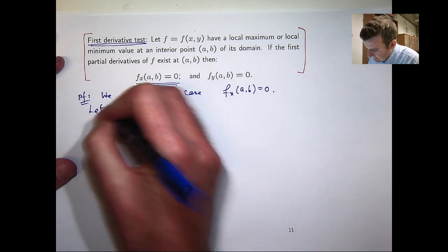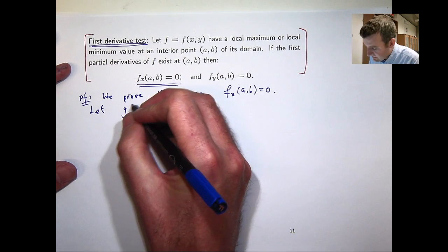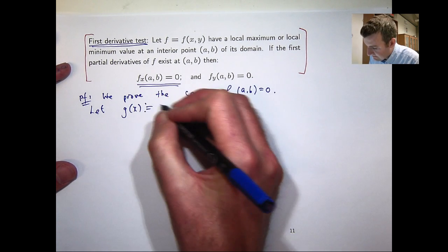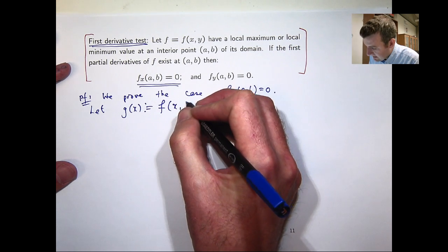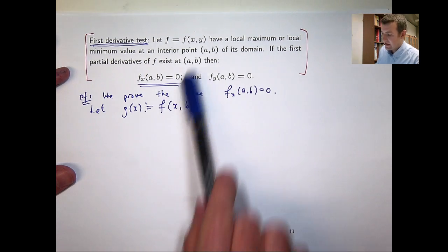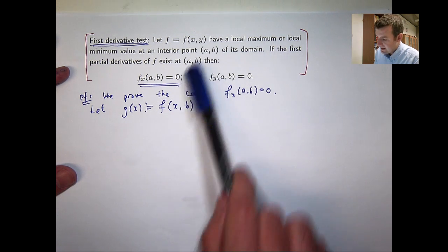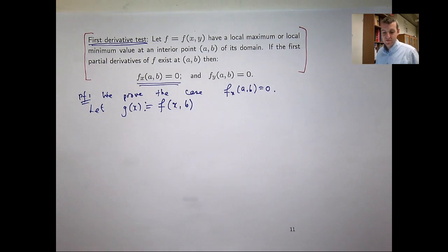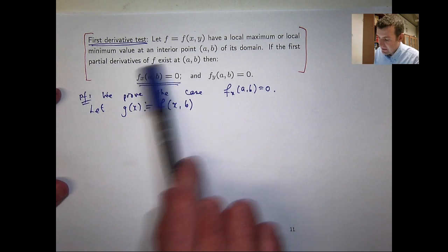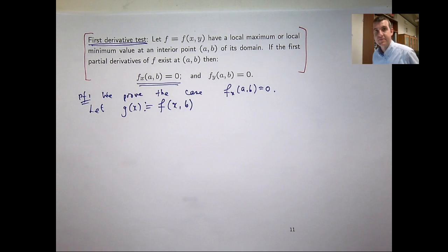Now let, I'm going to introduce the following function. Essentially I'm going to let our function be fixed in the second variable and this makes it then a function of one variable. So this is basically just a function of one variable. And in fact we're going to come up with this just using this function here and the limits of a regular derivative for a function of one variable.